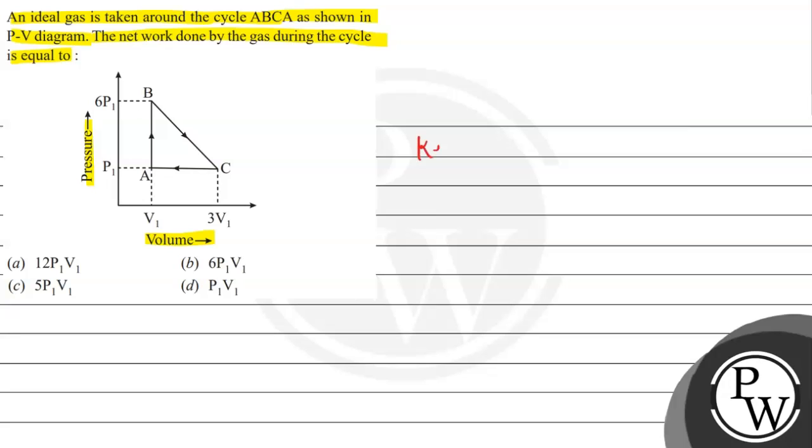Now, let us see this question what will be the key concept. The key concept of this question is work done under the graph. So, when we have a graph given, then we will find out the work done.